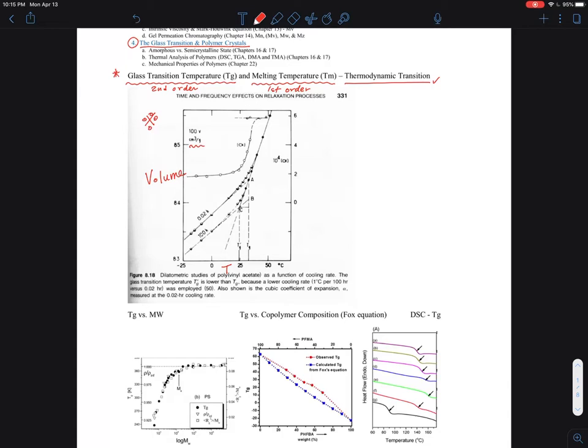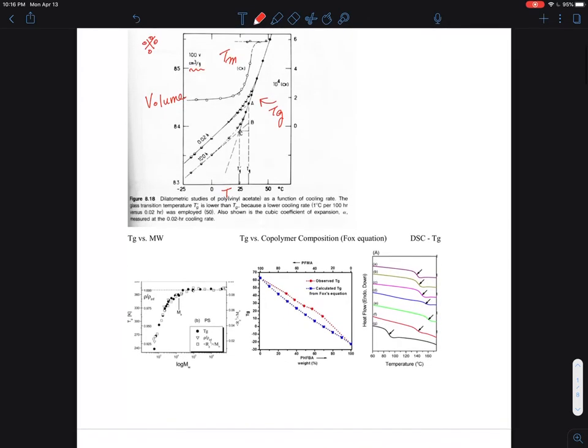Depending on whether polymers undergo melting or glass transition temperature, this behavior is more like melting, and this curve is more like Tg. This graph is a little bit more complicated, so I would give you a simpler version of that.